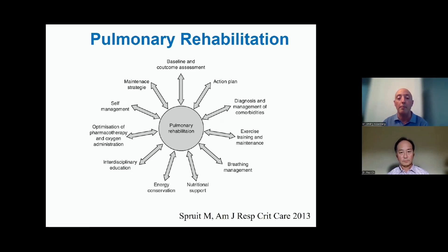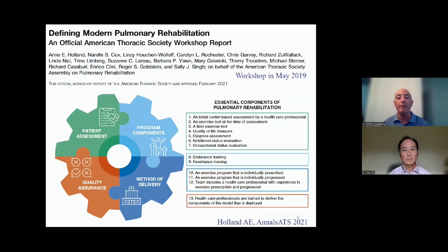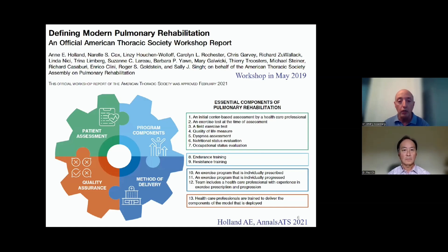This diagram was from Dr. Martin Spruit from the Netherlands, who led the 2013 guidelines, and as many of you may be aware, the 2023 guidelines that Dr. Oh will present have updated some of our PICO questions. To define modern pulmonary rehabilitation specifically, this diagram is taken from Holland and colleagues published in the Annals of ATS in 2021, based on a workshop meeting with multiple stakeholders in May 2019, prior to the COVID pandemic.